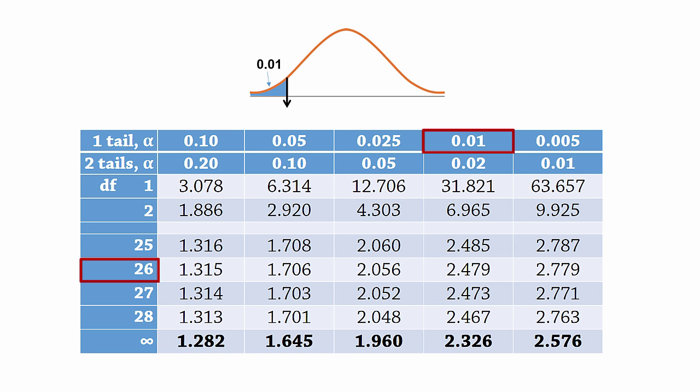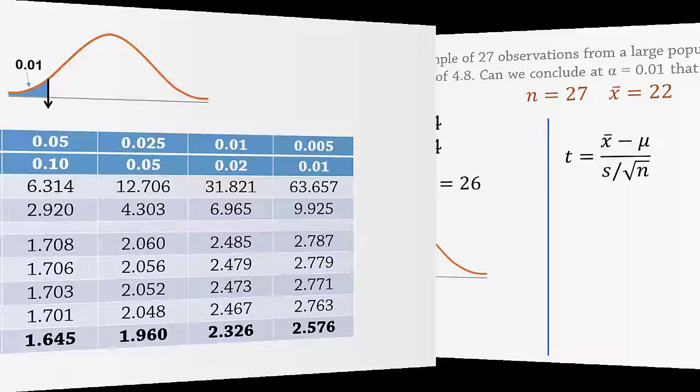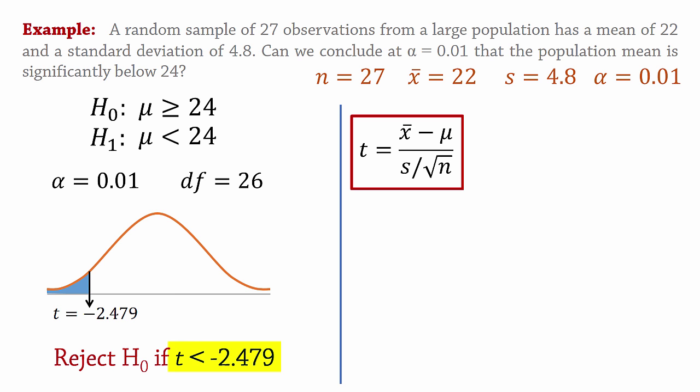But because this is a left-tailed test, it will actually be negative 2.479. So we say we reject the null hypothesis if the t-statistic is less than negative 2.479.